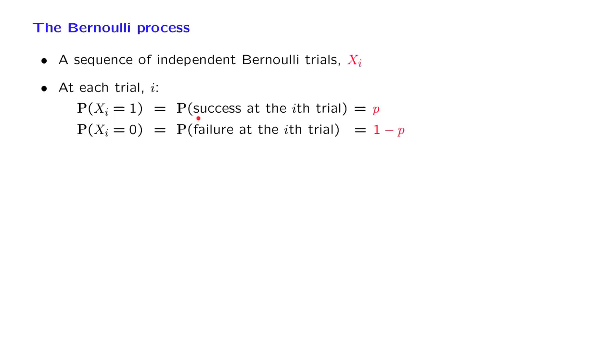And in that case, we usually say that there is a success at the ith trial. And the remaining probability, 1 minus p, is assigned to the possibility that the random variable Xi takes a value of 0, in which case, sometimes we say that there was a failure.